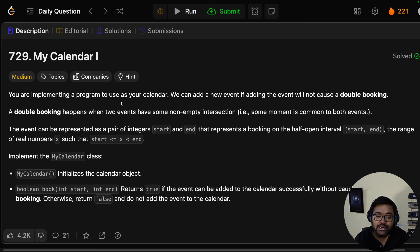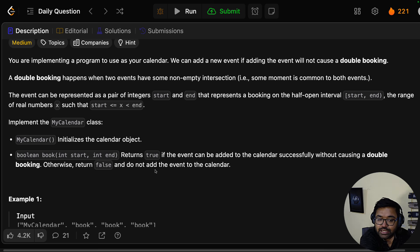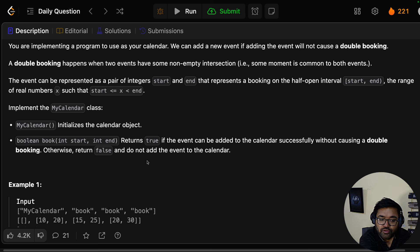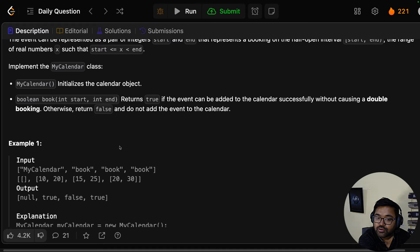Implement the MyCalendar class. MyCalendar initializes the calendar object. The book function returns true if the event can be added to the calendar without causing a double booking, otherwise return false and do not add.